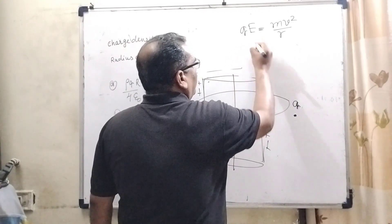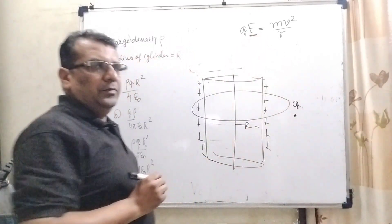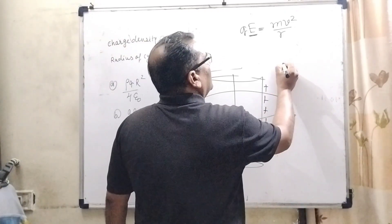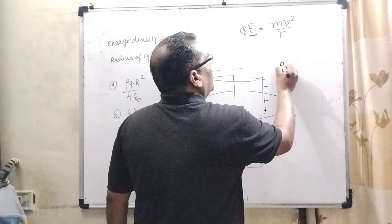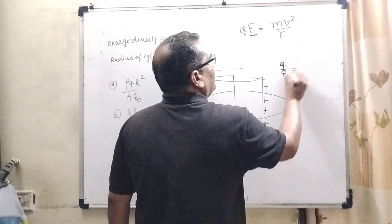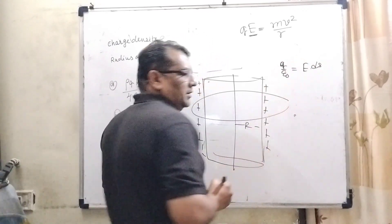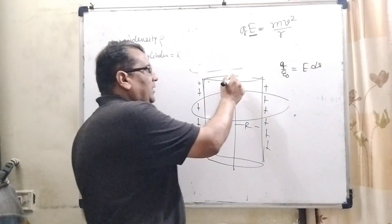Now here, for the calculation of electric field, we use Gauss's theorem. You know that very well. Q/ε₀ = E·ds. Here ds is the surface area of the charged body.